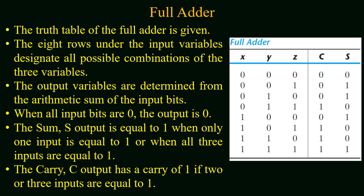The truth table for the full adder is given here. The eight rows under the input variables designate all possible combinations that can be applied to the circuit as input. The output variables are determined from the arithmetic sum of the input bits corresponding to each combination.